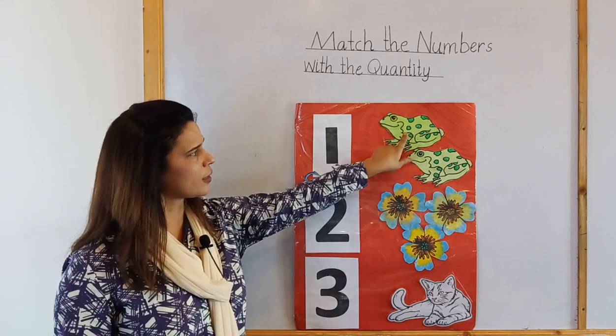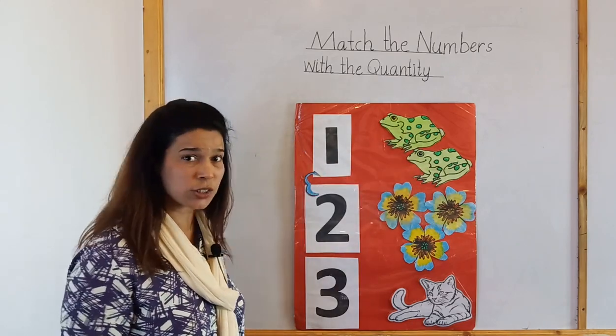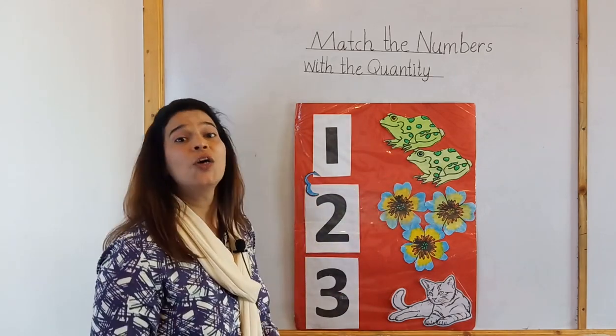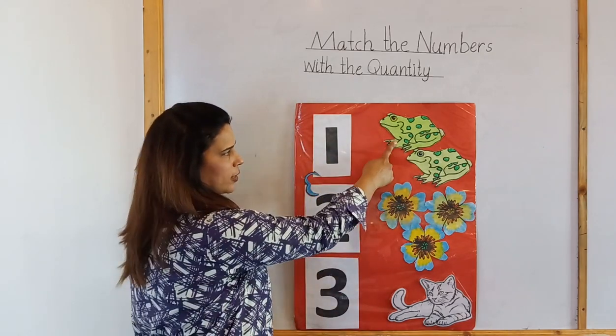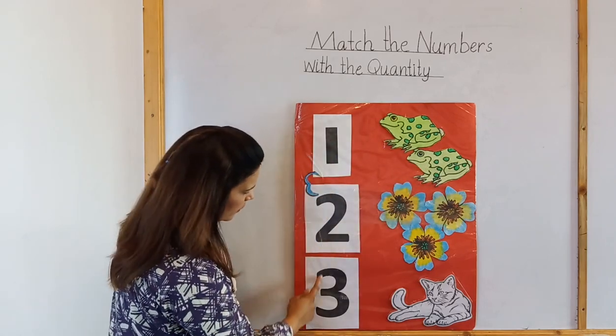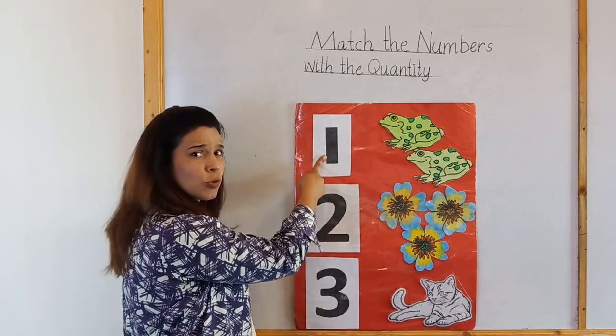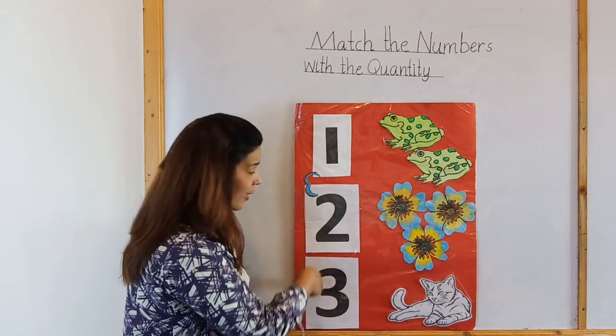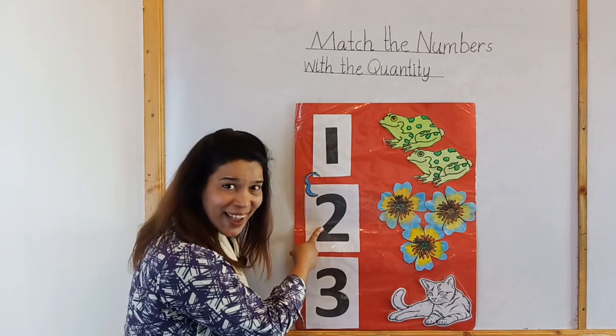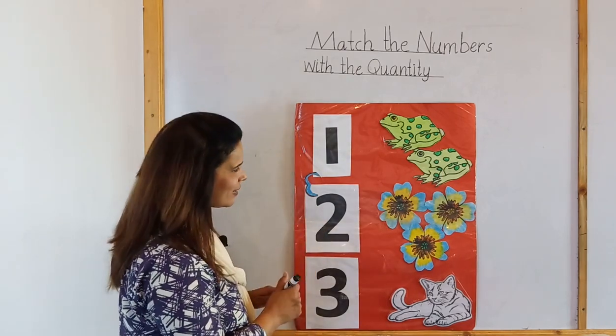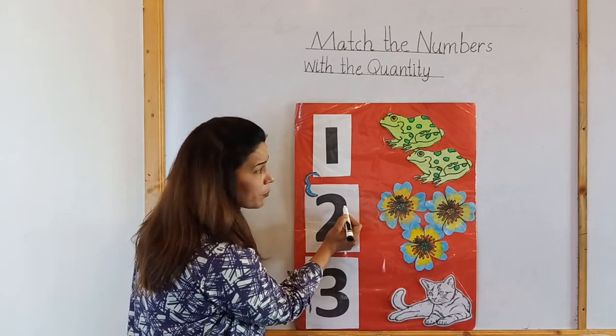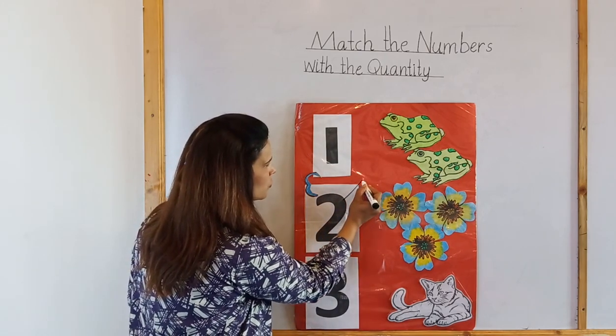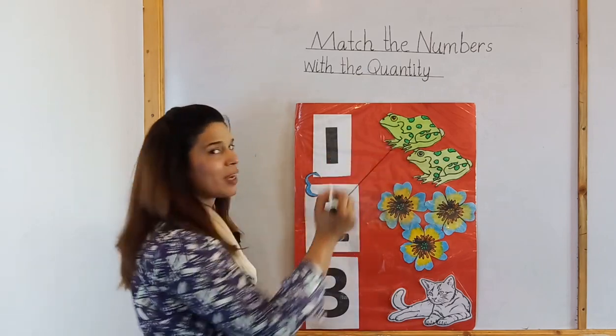Now look at this picture first. Here are how many frogs? 1, 2. How many frogs? 2 frogs. 1, 2. Where is 2 number? Is this 2? No. Is this 2? No. Is this 2? Yes! This is number 2. We will match number 2 with 2 frogs. Very good.